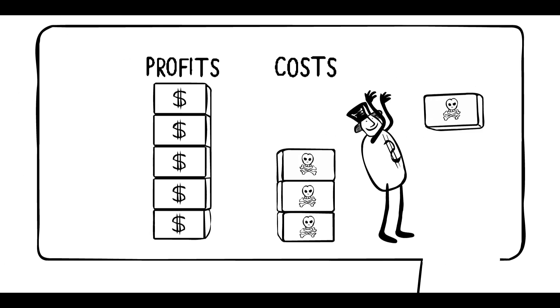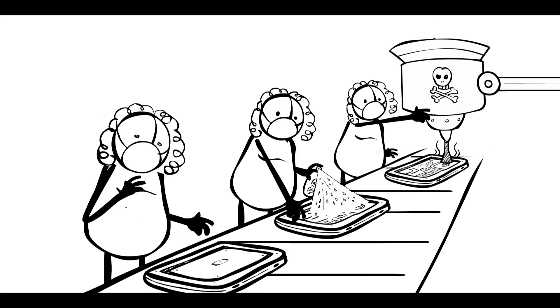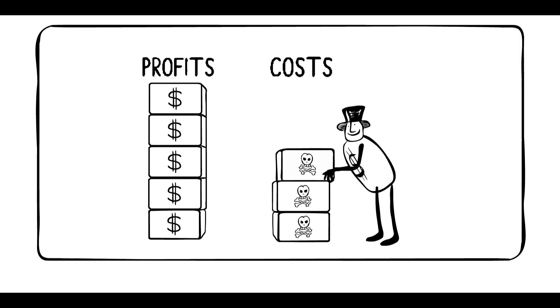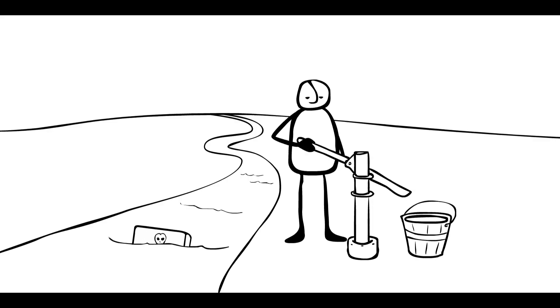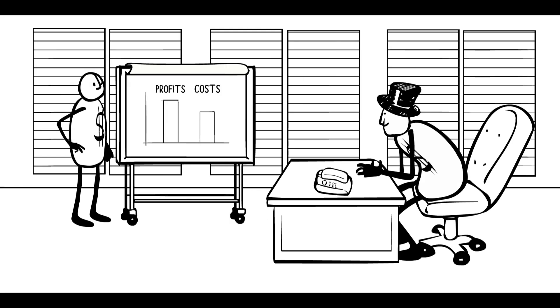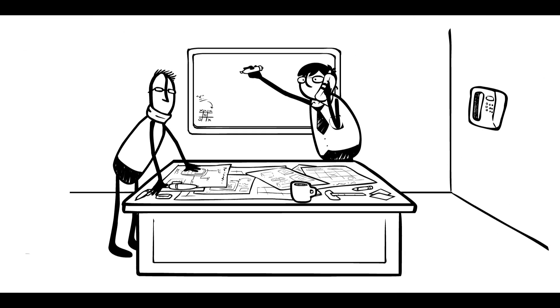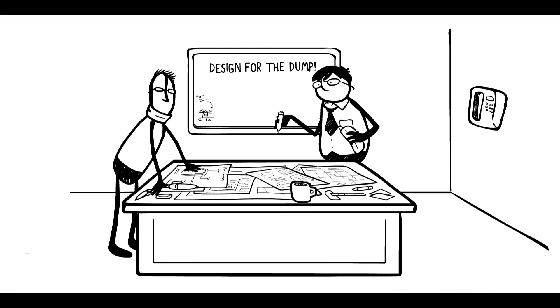Instead of companies paying to make their facilities safe, the workers pay with their health. Instead of them paying to redesign using fewer toxics, villagers pay by losing their clean drinking water. Externalizing costs allow companies to keep designing for the dump. They get the profits and everyone else pays.